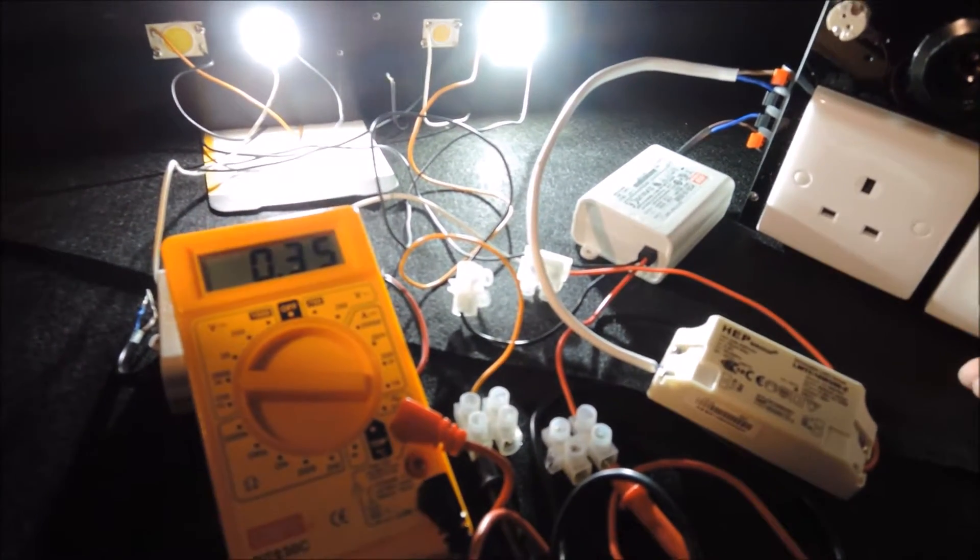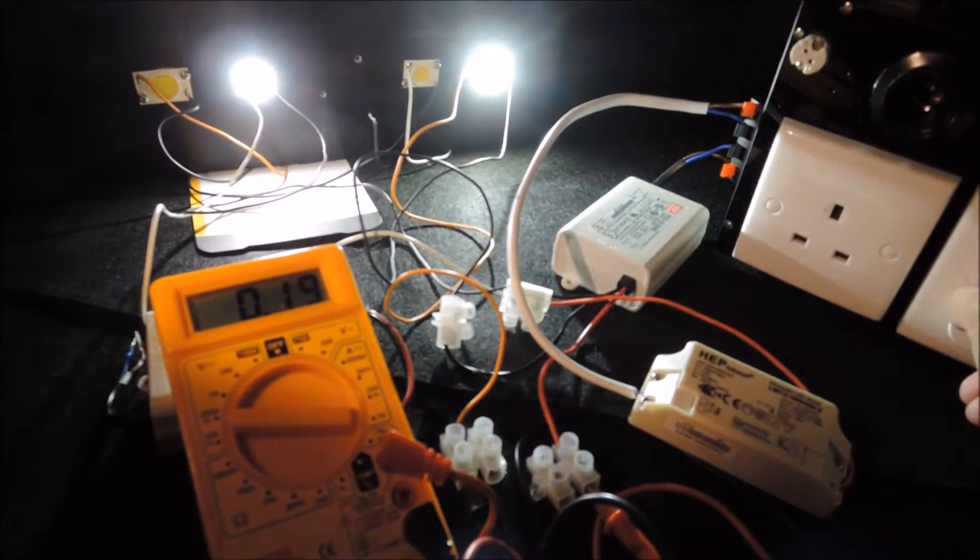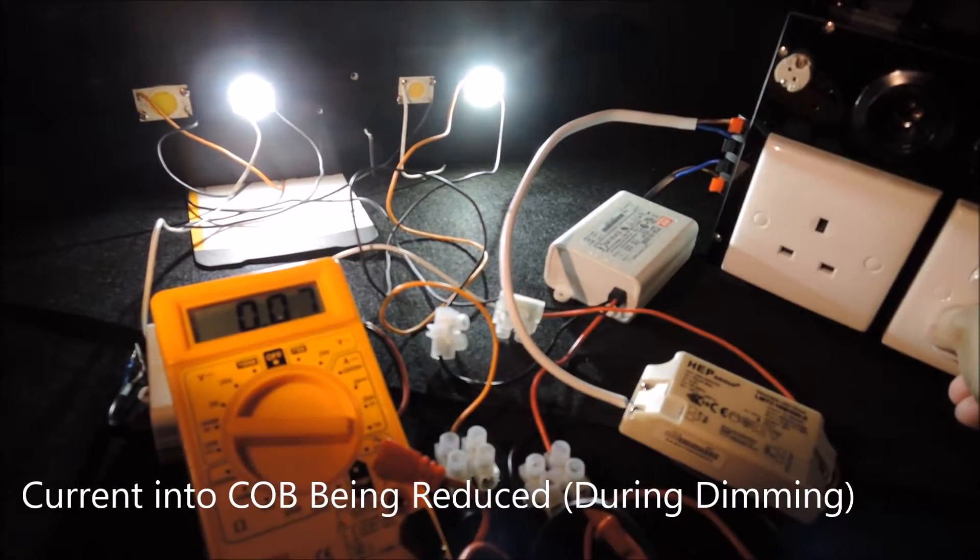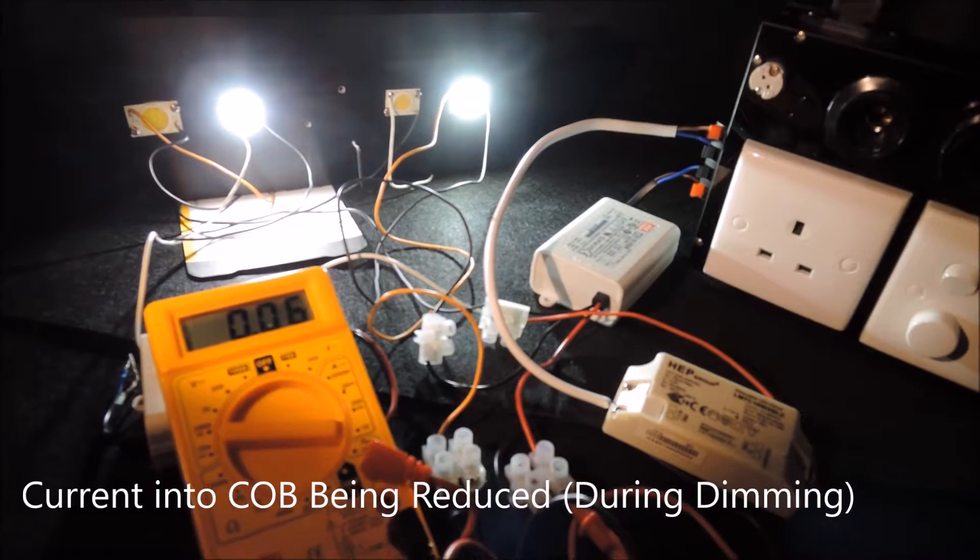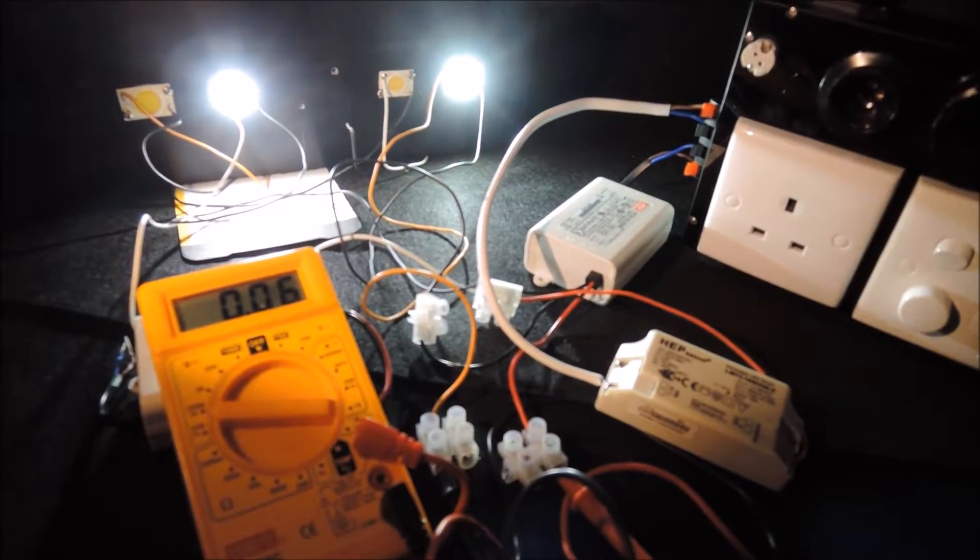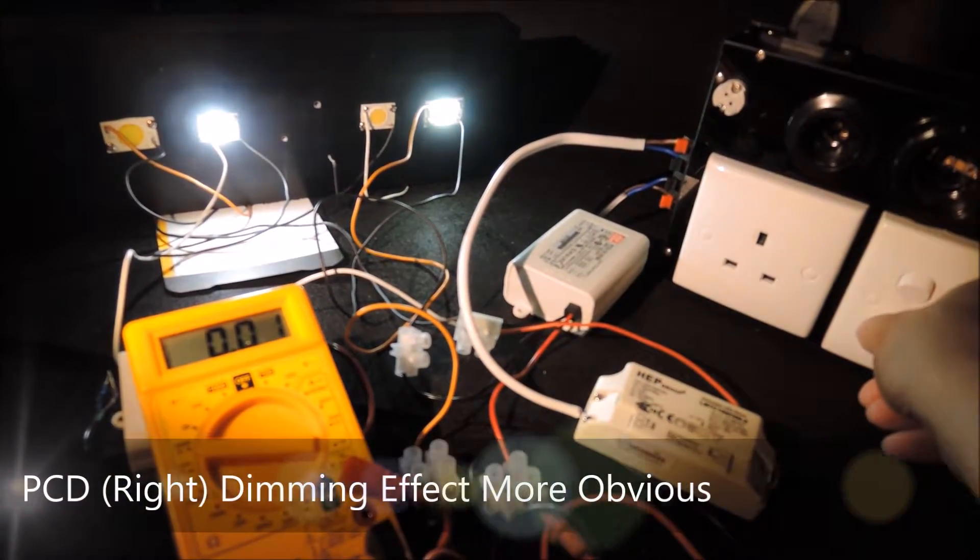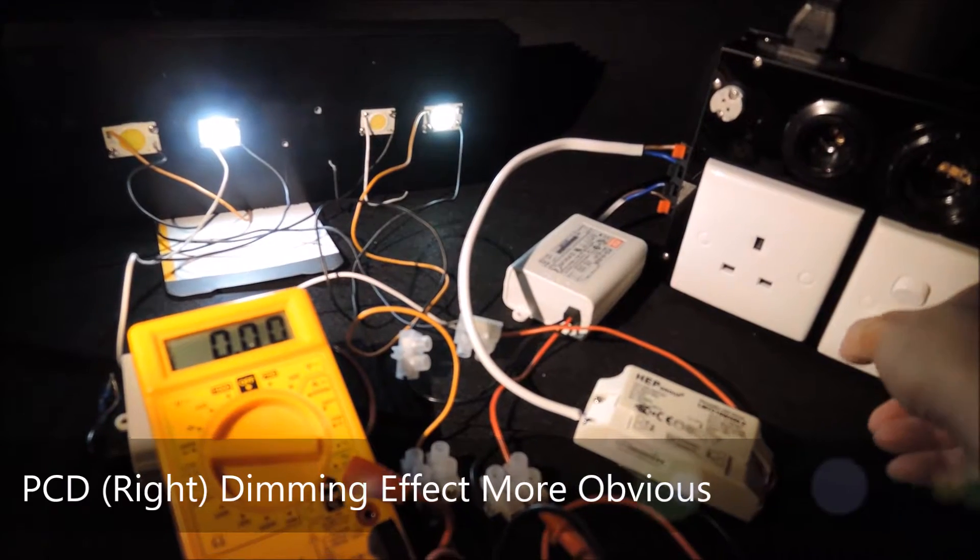As we start dimming, you see the current that's going into the COB is being reduced, and the dimming effect is more obvious of the Meanwell drivers.